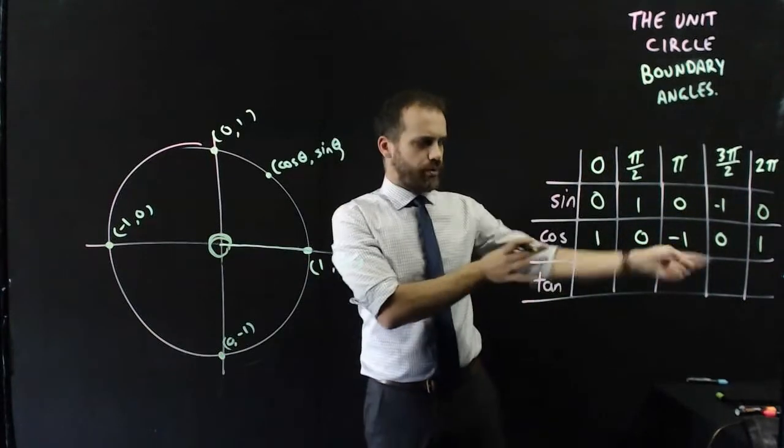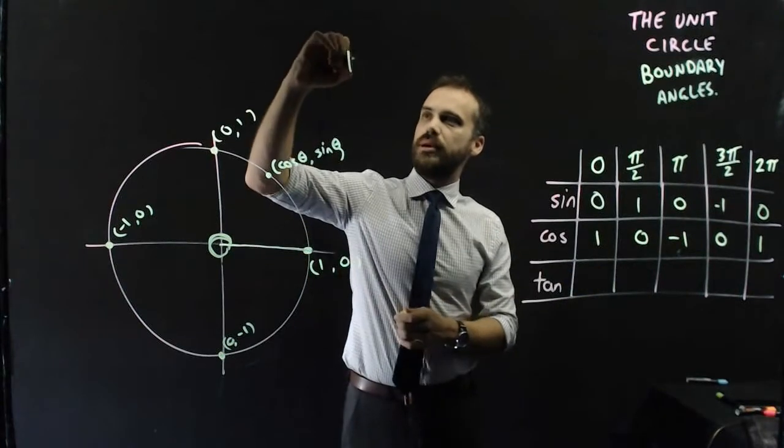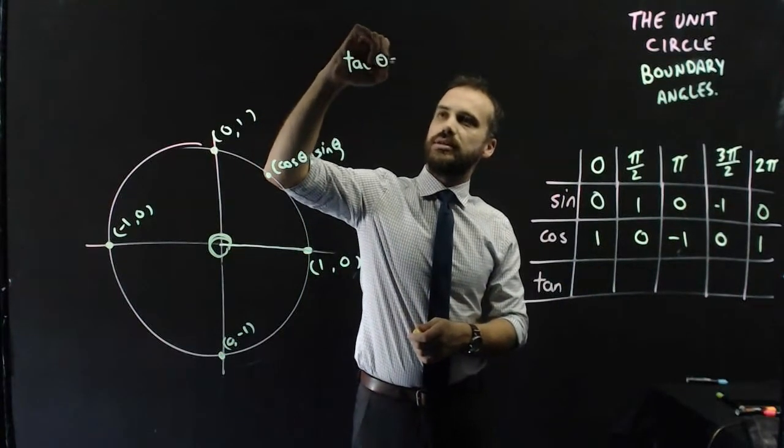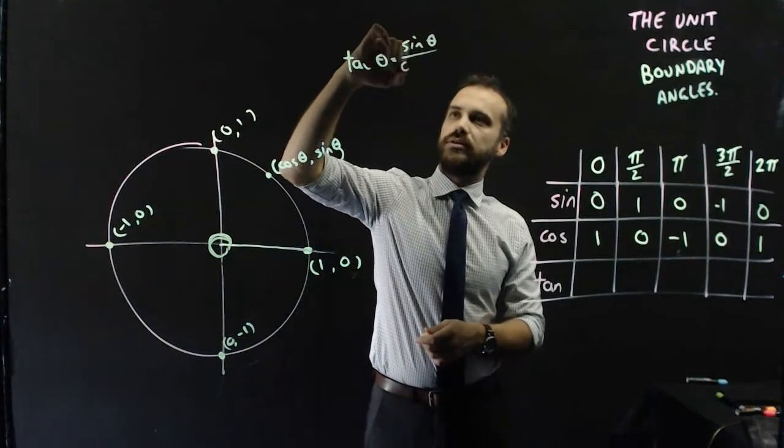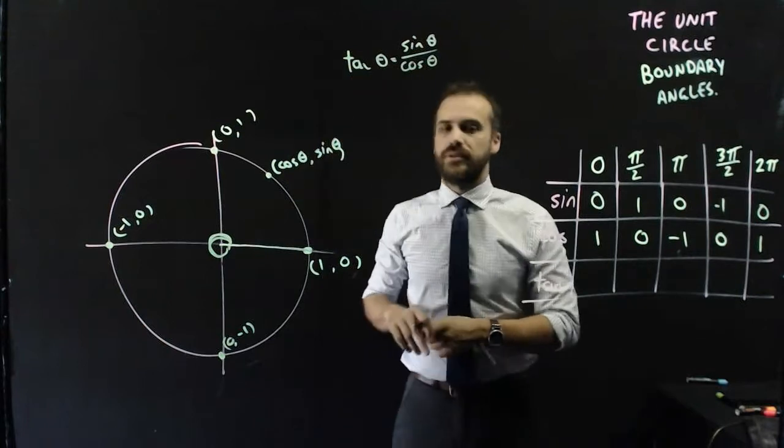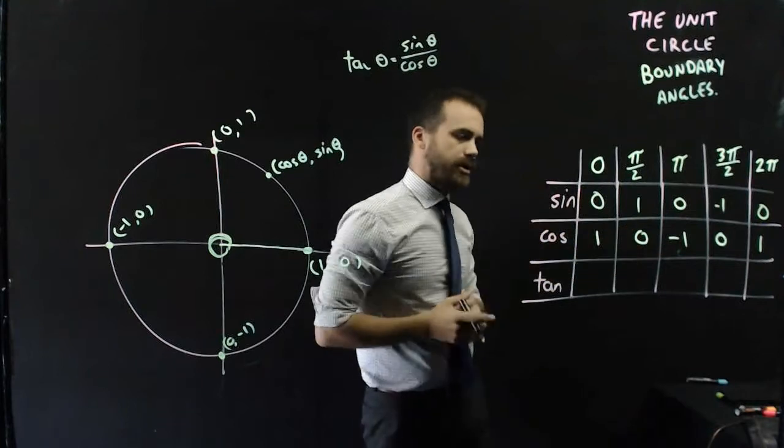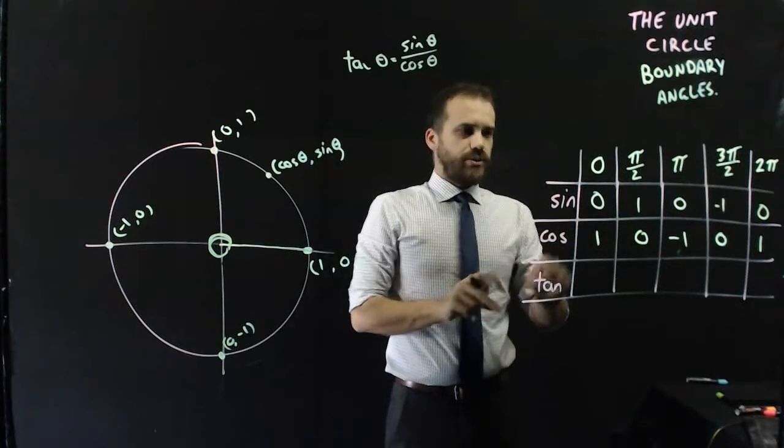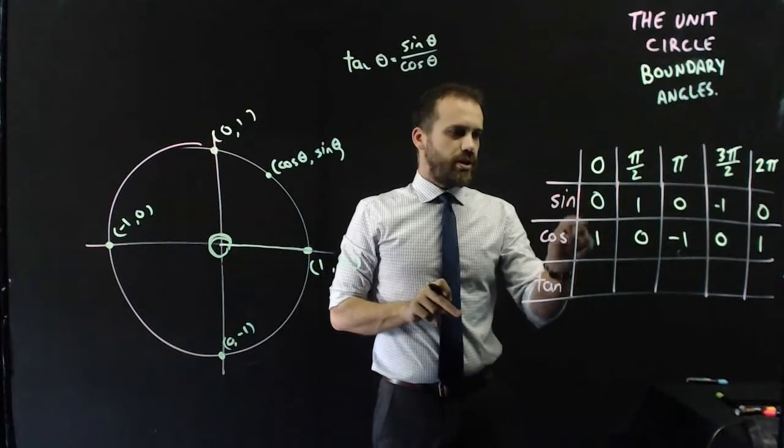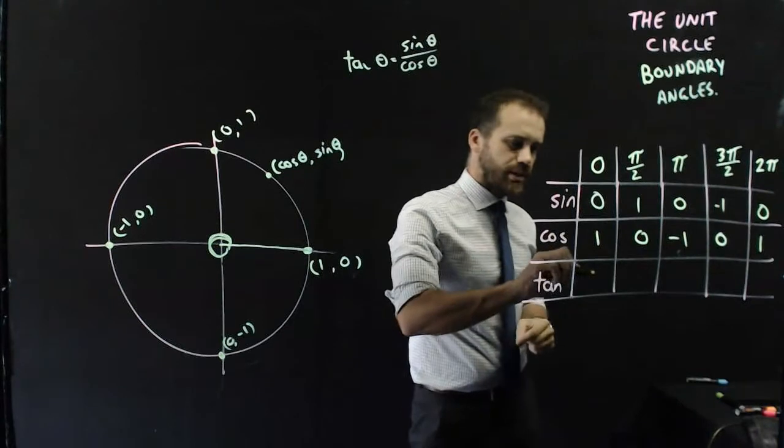Now, what about tan that I've decided to leave blank? Well, hopefully you remember that tan theta is equal to sine theta over cos theta. Now, usefully, they're all over each other already in my little table. So tan theta is equal to 0, sine theta over cos theta, 0 over 1. 0 divided by 1 is 0.